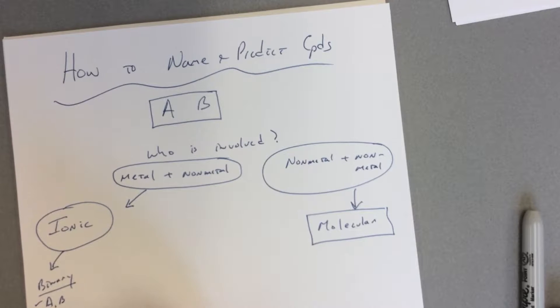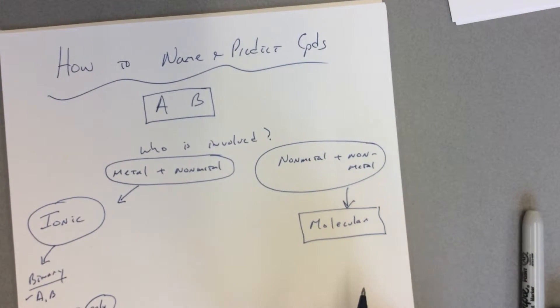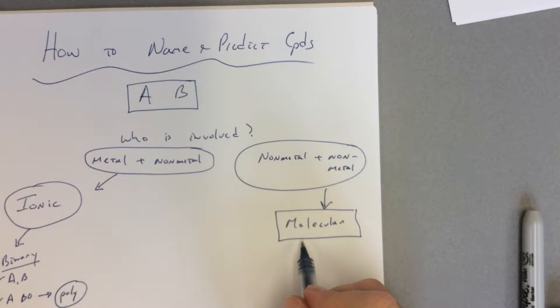So then we know to go to our polyatomic area. Again, if we notice that they're both nonmetals.